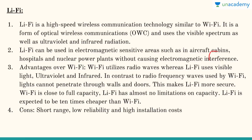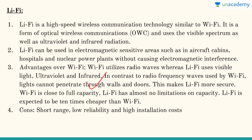Advantages over Wi-Fi: Wi-Fi utilizes radio waves, whereas Li-Fi uses visible light, ultraviolet, and infrared. In contrast to radio frequency waves used by Wi-Fi, light technically cannot penetrate through walls and doors, making Li-Fi much more secure. It is also much faster. Wi-Fi is close to its full capacity, whereas Li-Fi has almost no limitations on capacity. Li-Fi will be even 10 times cheaper than Wi-Fi — cheaper, faster, and more sustainable. Cons include short range, low reliability, and high installation costs.